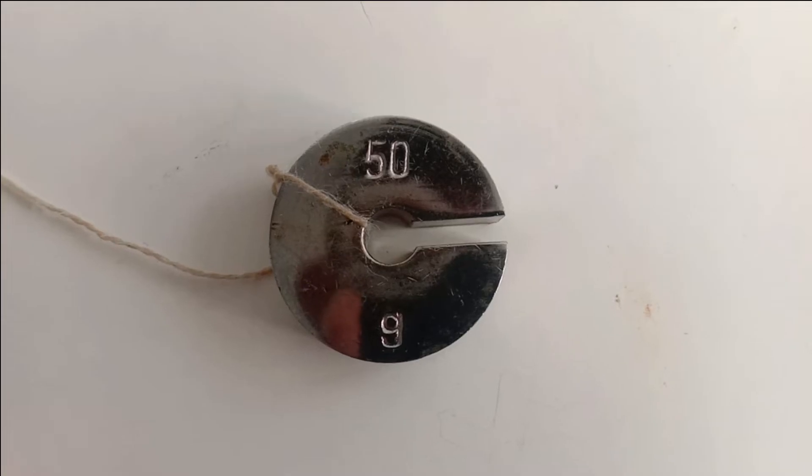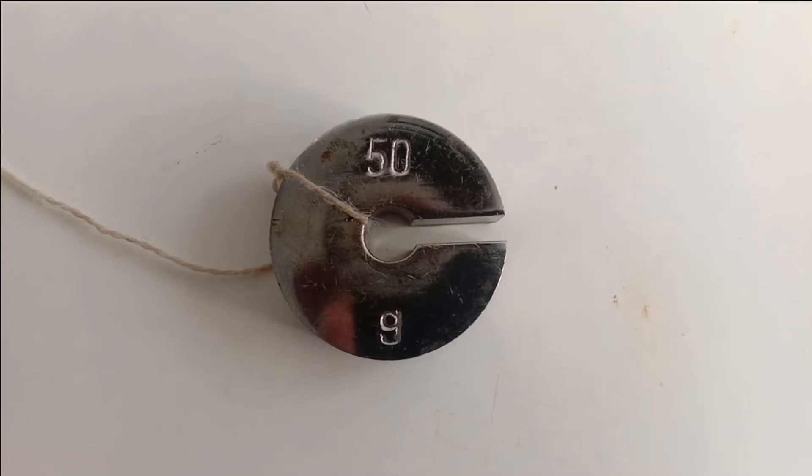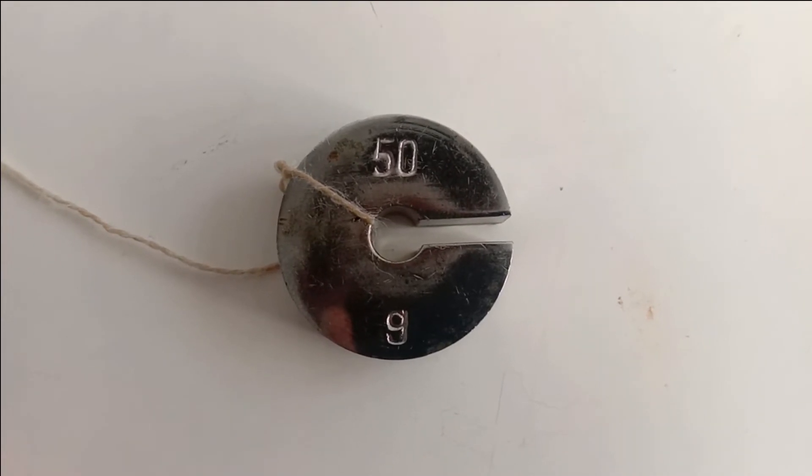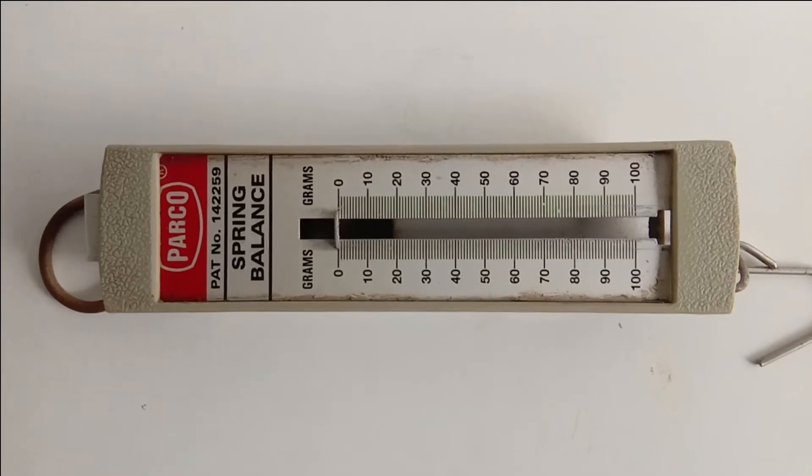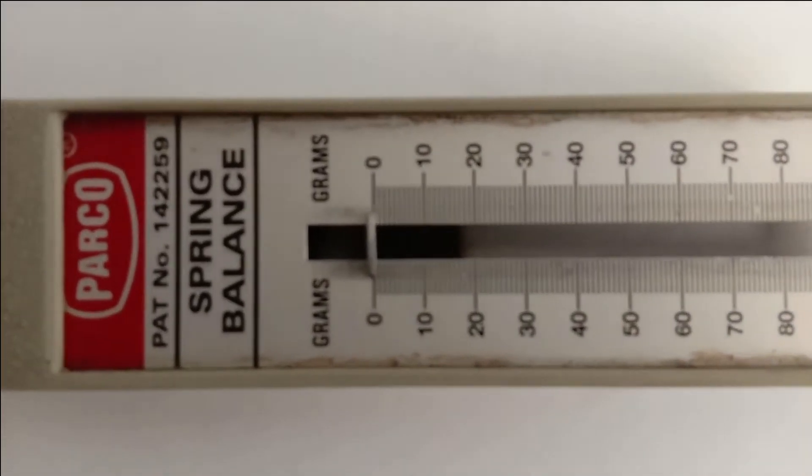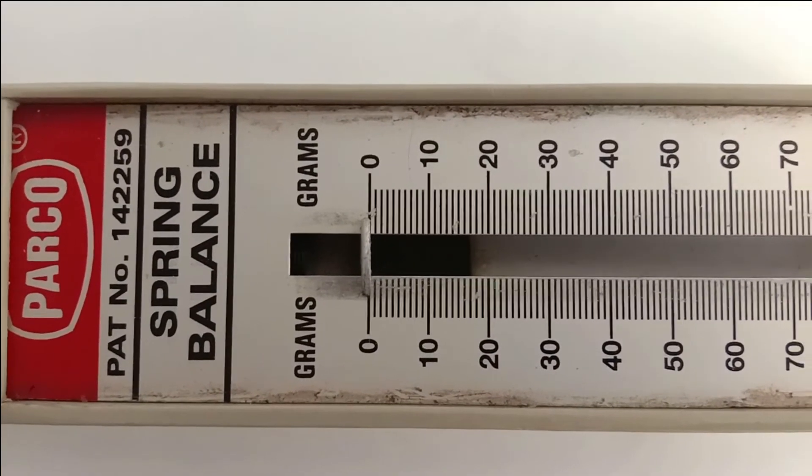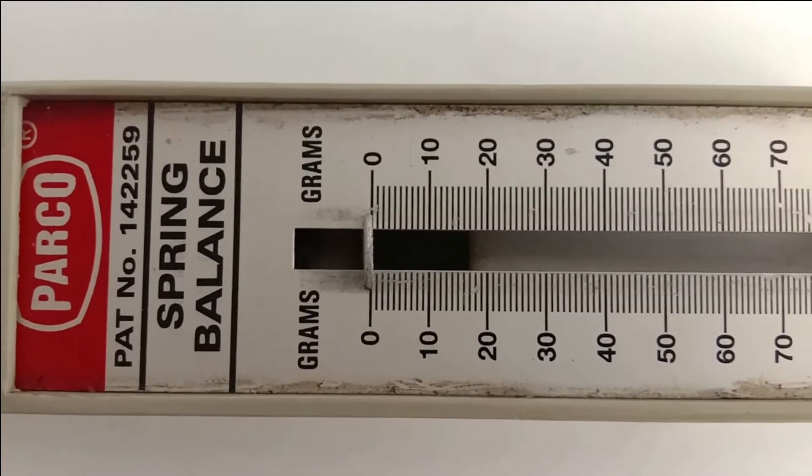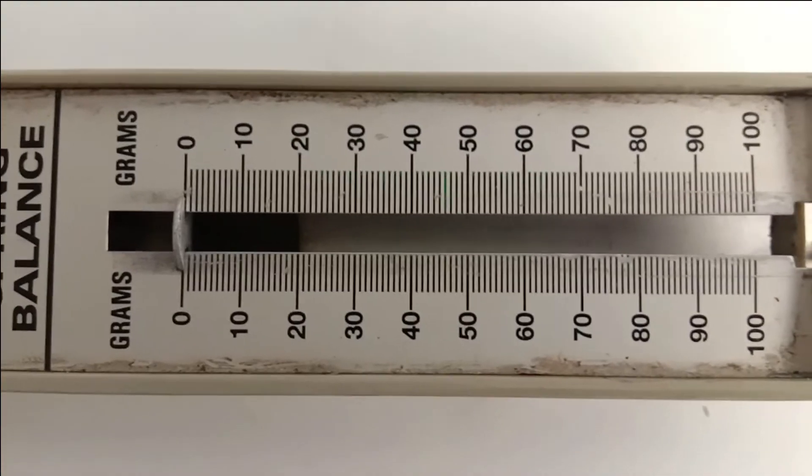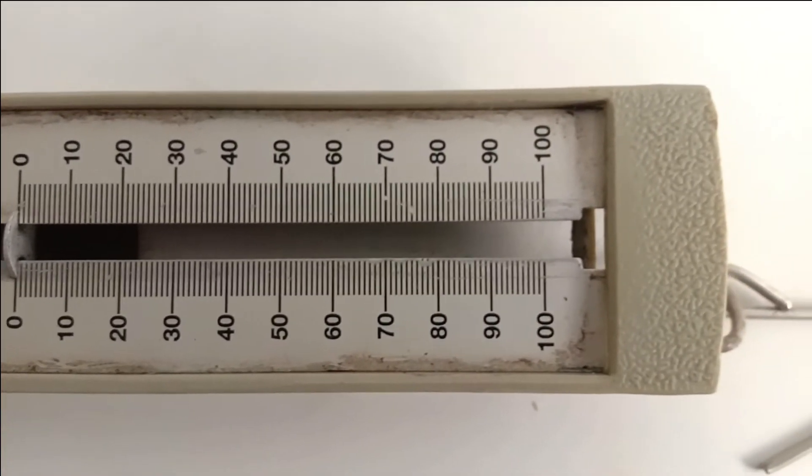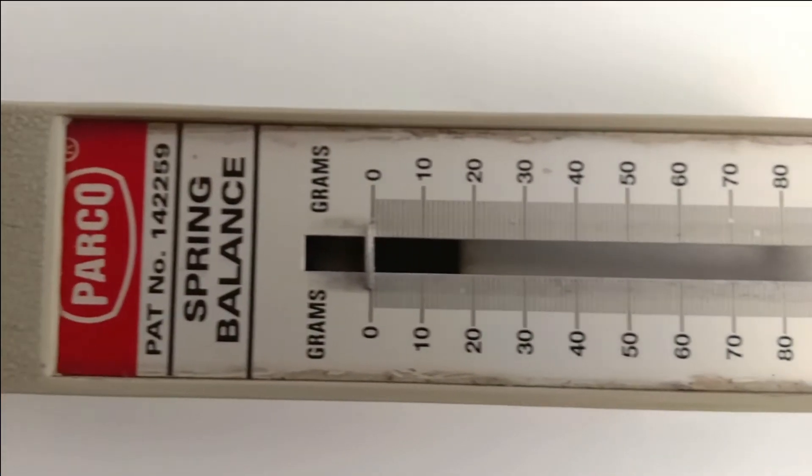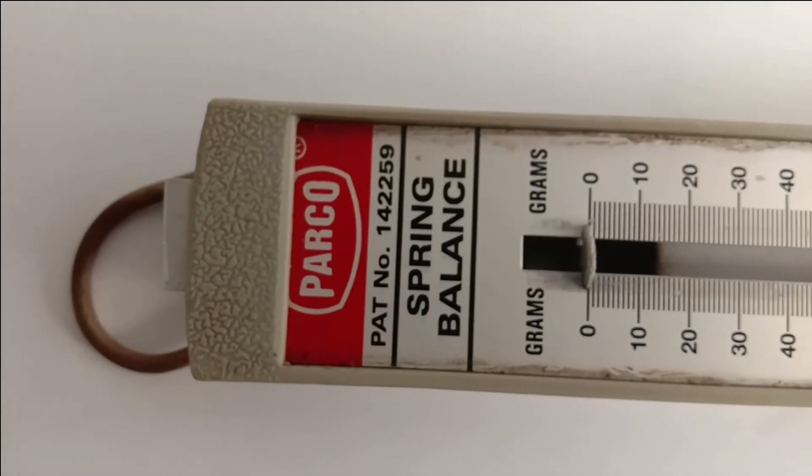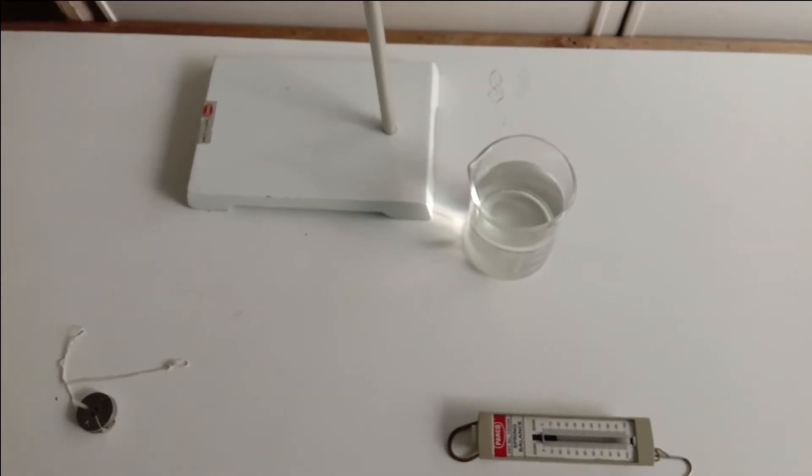This is a standard 50 grams mass which is connected with long thin thread. This is a spring balance which is going to measure the weight of the object. Please do not confuse with the grams written on it. If this reading shows 40 grams which means the weight of an object is 40 gram force because gram force is also one of the units of force. It can maximum measure weight up to 100 gram force.